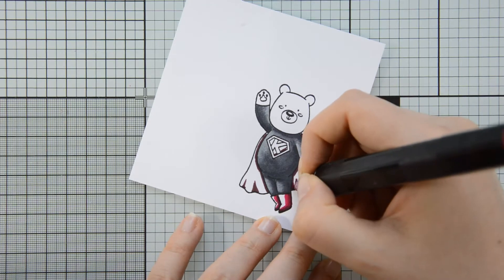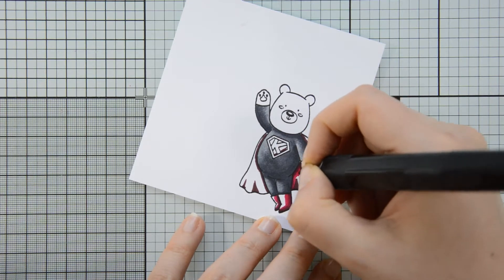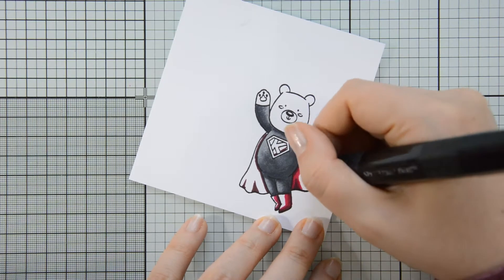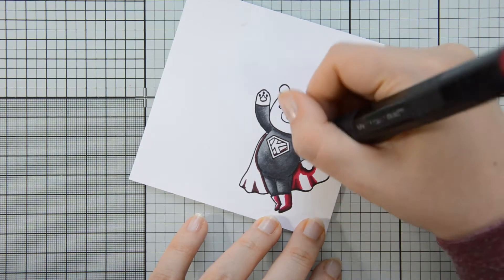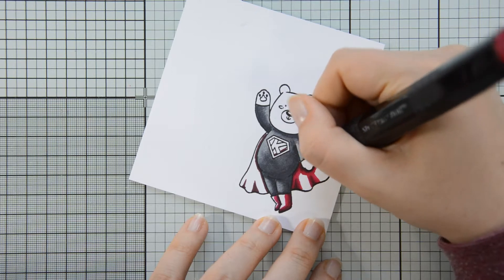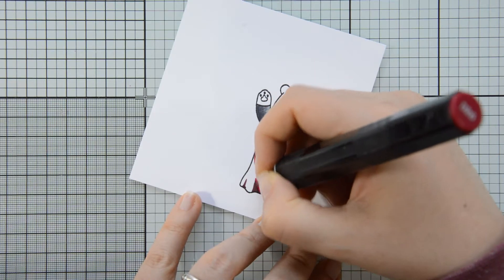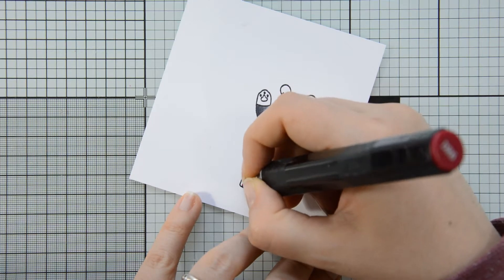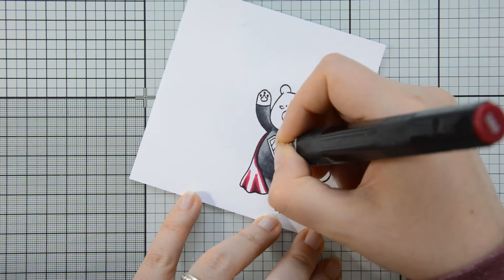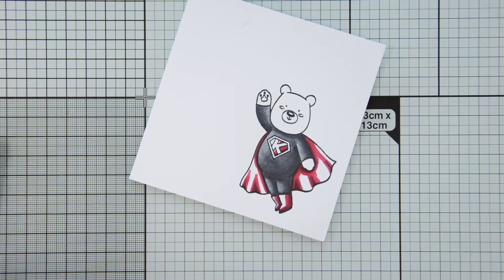You see those little triangles that I drew on the cape? Those are meant to represent and render the folds in the cape. So whenever I felt that the cape was folding away from me, I drew in one little triangle, and I am now blending them out with my mid-tone marker, which again is the DR6.